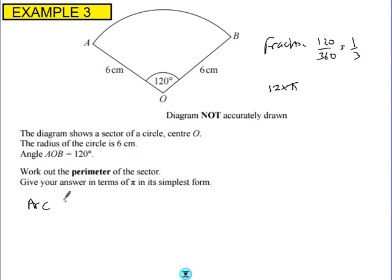So we want a third of that to work out the arc length. So let's just write this down. So the arc length, so that's AB, is equal to a third of the circumference. So a third times 12 times π, which is 4π.